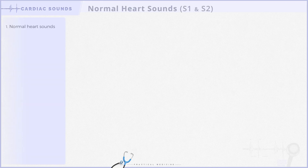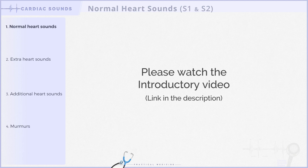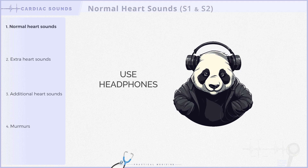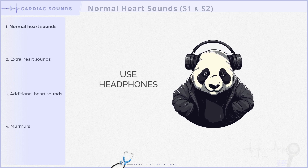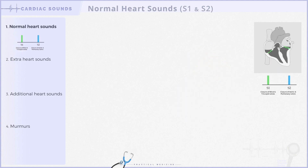In our previous video we talked about categorizing heart sounds into four groups. Today we're focusing on the first category: normal heart sounds. Before we begin, if you haven't watched the introductory video, we recommend checking it out for context. Now let's dive in — the normal heart sounds comprise the first and second heart sounds, known as S1 and S2 respectively.